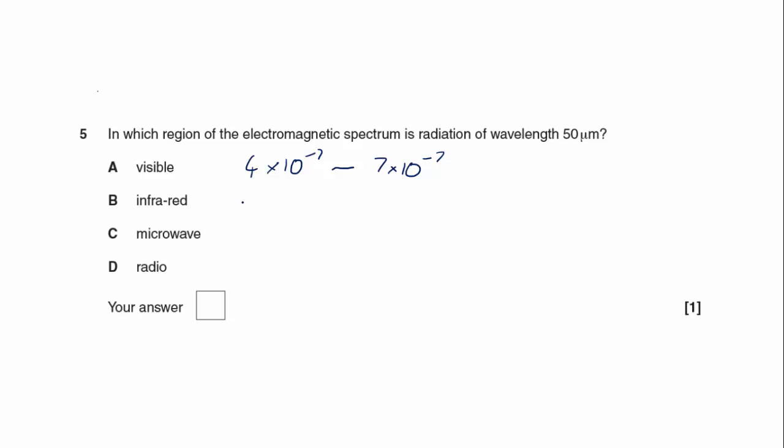Infrared is 7 times 10 to the minus 7 to 10 to the minus 3. Microwave, 10 to the minus 3, going to 10 to the minus 1. And radio is greater than 10 to the minus 1. Sorry, all of these are in metres.